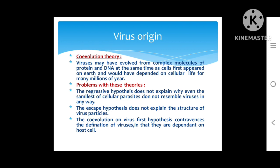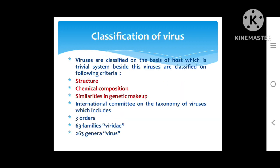The third theory is the co-evolution theory, in which viruses may have evolved from complex molecules of protein and DNA at the same time the first cells appeared on Earth, having depended on cellular life for many millions of years. There are problems with each theory: the regressive hypothesis does not explain why even the smallest cellular parasites do not resemble viruses; the escape theory does not explain the structure of the virus particle; and the co-evolution theory contradicts the definition of viruses as obligate intracellular parasites dependent on host cells.